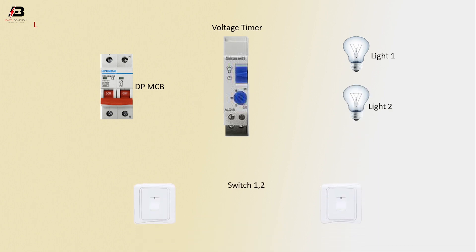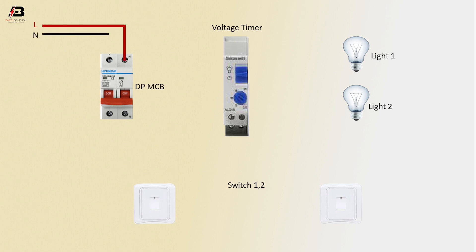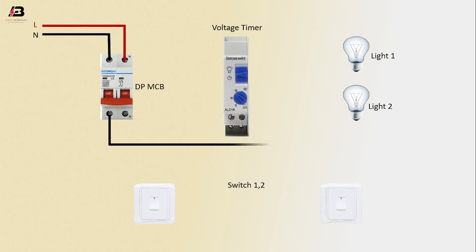Phase connection input to DPMCB. Neutral connection input to DPMCB. Neutral connection from DPMCB to connect light 1 and light 2. Neutral connection input to voltage timer.